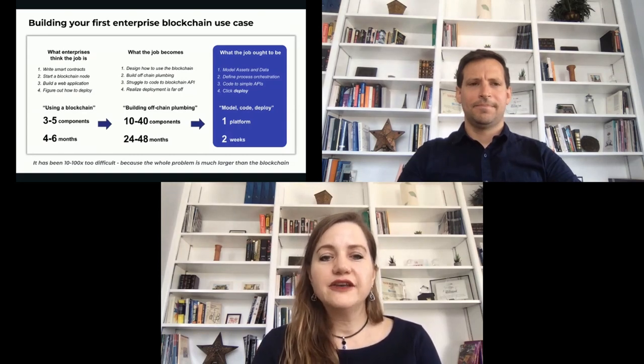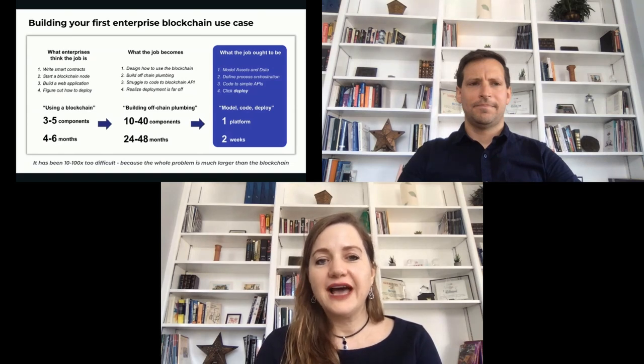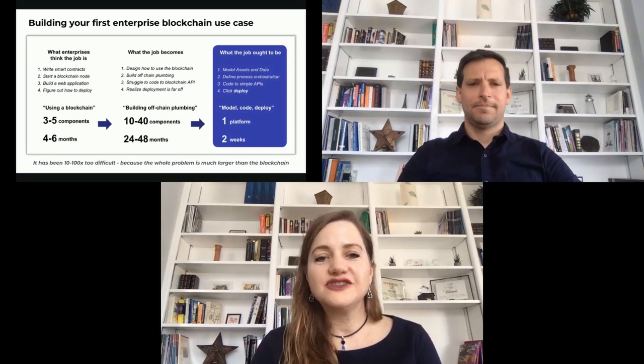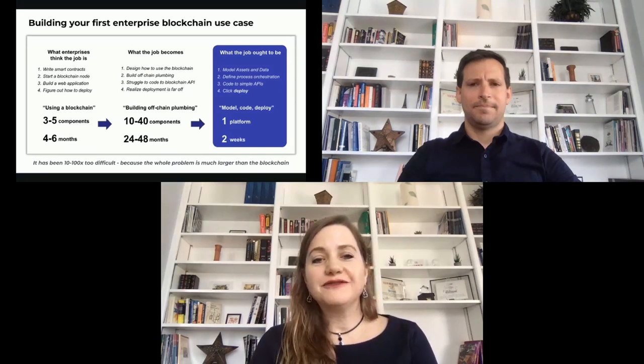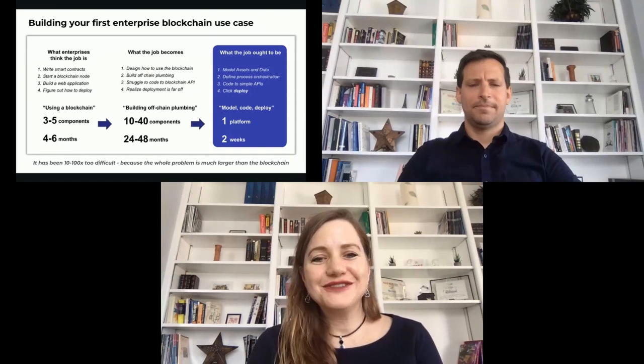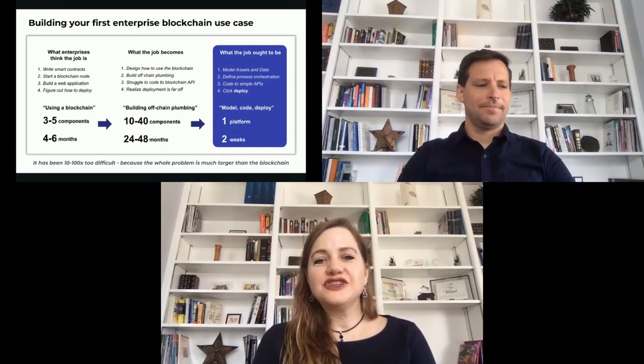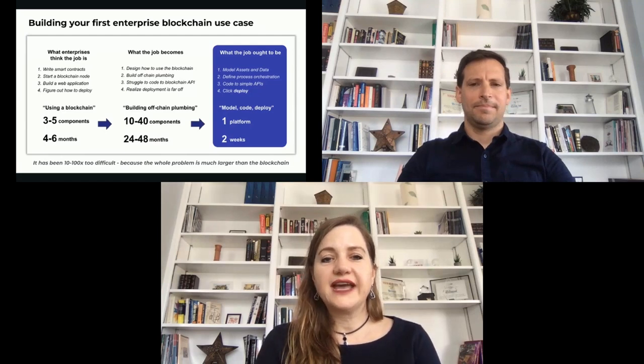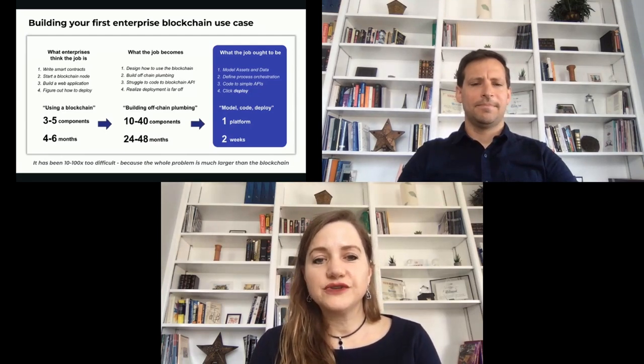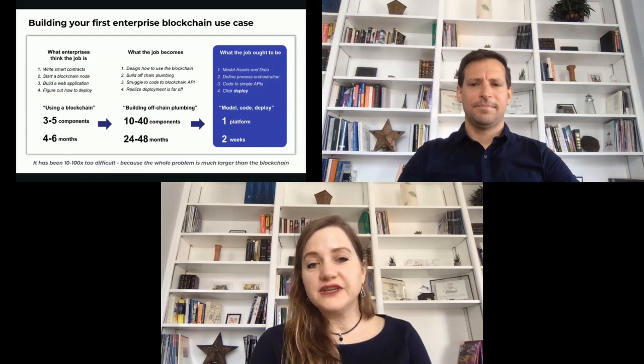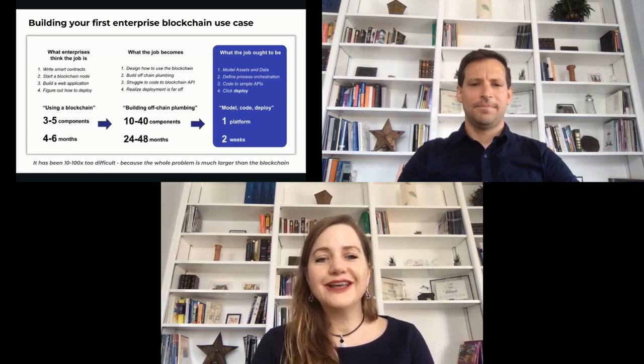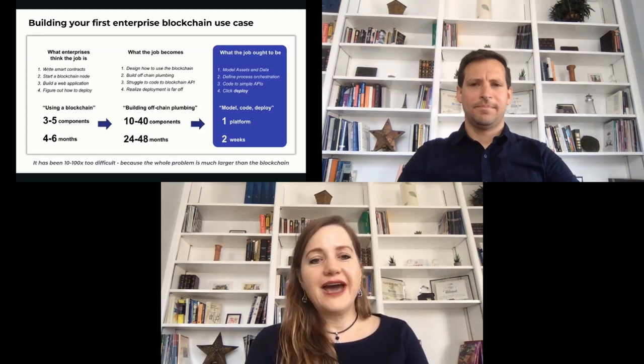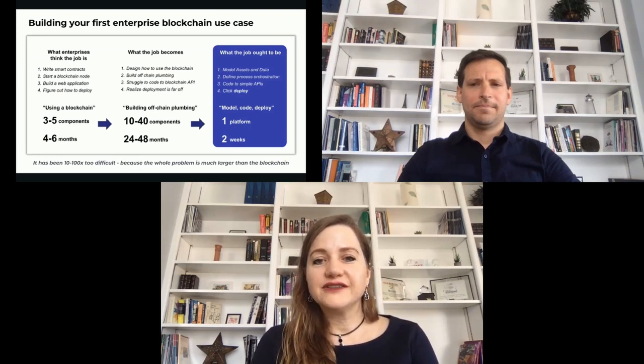What we've seen that's a very familiar pattern, enterprises think the job is in building their first use case, and this can be an emerging tech lab or innovation team. They think it's writing smart contracts. You start a node, you build the web app, and you deploy it. Sounds pretty simple. They think it's about three to five components, maybe we're talking in the months or maybe half year. What we've seen it repeatedly across industries, across blockchain initiatives and projects, whether it's just one company or we're trying to get to pilot with multiple parties or even into production. They have to design how to use the blockchain as part of the overall solution. Running the node, we've seen across industries five to 10% of the total solution.